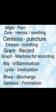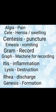Algea is a suffix. For example, neuralgia — algea meaning is pain. What is the root? Nerves. Neuralgia means nerve pain. Arthralgia — arthralgia meaning joint pain. Pain in joint is arthralgia.